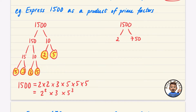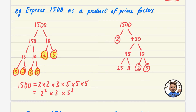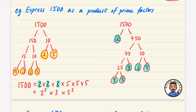Now trying the second tree starting with 2 × 750. The 2 is prime; 750 splits into 75 × 10. The 10 gives 2 and 5 — both prime. 75 is 3 × 25, and 25 is 5 × 5. Collecting all primes: two 2s, one 3, three 5s — giving 2² × 3 × 5³, exactly the same answer regardless of how you start your tree.